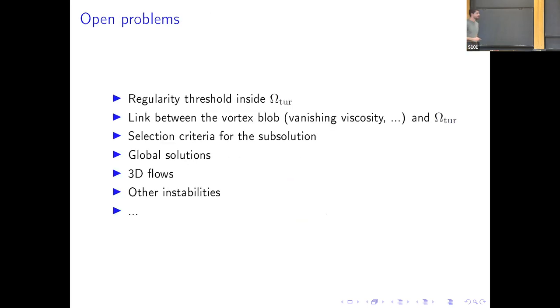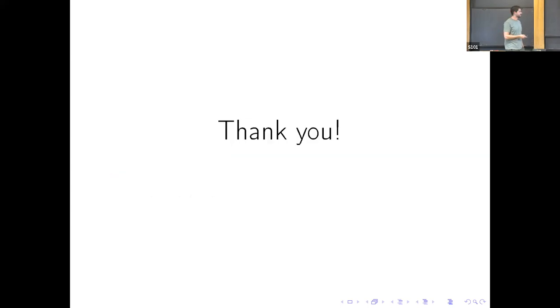And I conclude with some open problems. One is the, in the construction I mentioned, the solution inside the turbulent zone is just in L infinity. So, it would be interesting to apply other methods to construct a more regular solution inside the turbulent zone. This link that I mentioned in the numerics between vortex blob or balancing viscosity or surface tension with the turbulent zone. Some selection criteria to recover uniqueness of the subsolution. I mentioned these results are local in time, to try to construct global solution. Also, the constructions I mentioned are in two dimensions. So, it's likely it can be done in three dimensions, but this has not been done yet. And to establish other instabilities. So, that's, thank you.